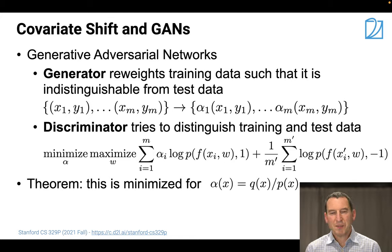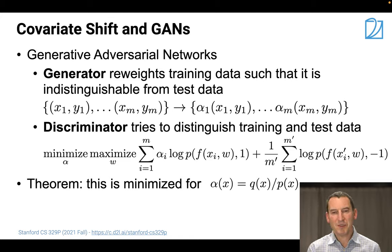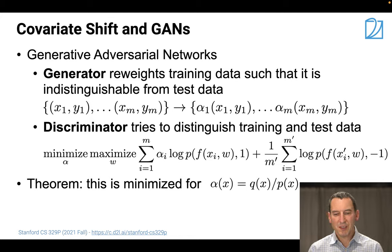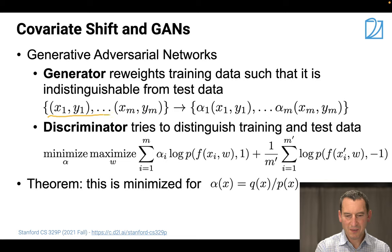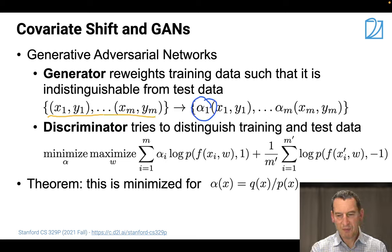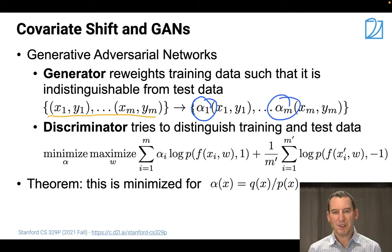You could build a generator, and the only difference to a regular generator - as what most people use when they want to generate photos of humans, for instance - is that our generator just takes the original data and resamples it. It just randomly spits out observations, but with those sampling probabilities rather than uniform ones.